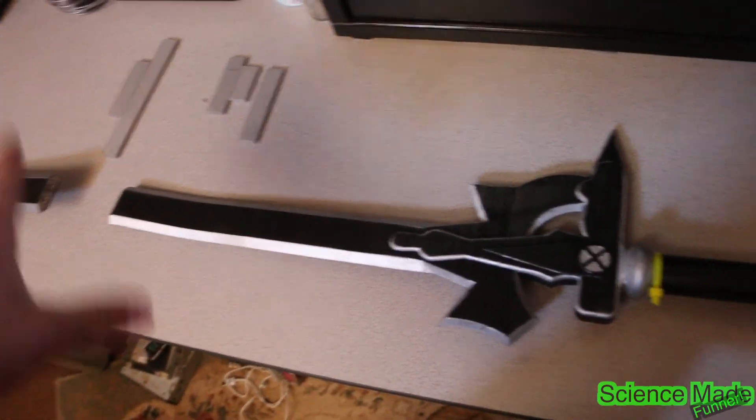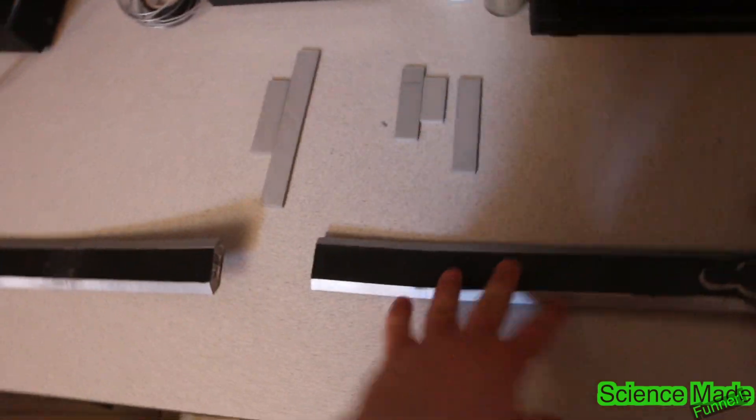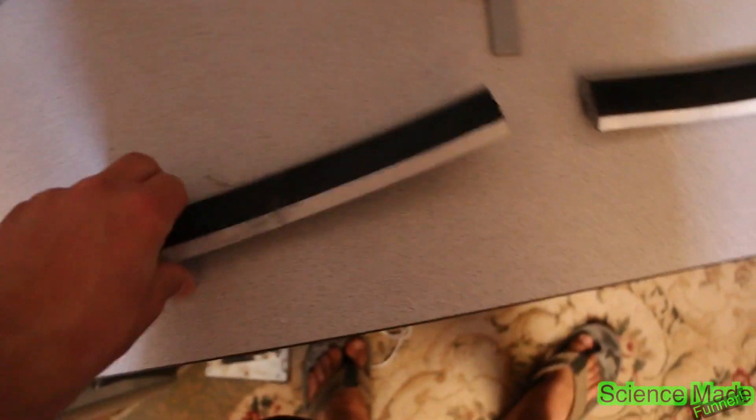Anytime I'm ever gonna do a 3D print of swords again, I'm gonna put probably a wooden dowel from this end all the way to that end and just use the plastic as a cover. You'll also notice it did that same thing - it warped and also broke.